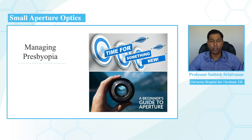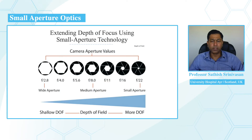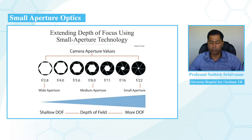We are now discussing a new technology — another tool in presbyopia correction — using small aperture technology, which enhances the depth of focus. This small aperture intraocular lens works on the same principle as an SLR camera based on aperture size. A bigger aperture gives a smaller depth of focus, and as we decrease the aperture size, we get a larger depth of focus. This is the simple principle utilized in the optics of the small aperture intraocular lens.